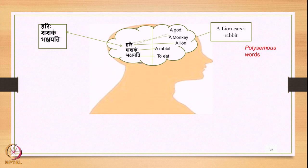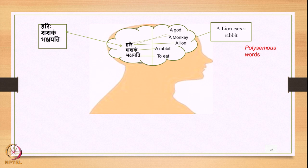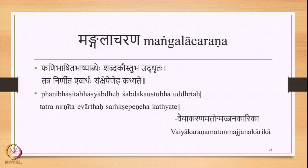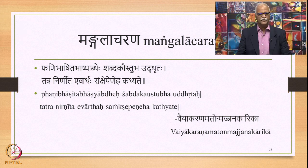To summarize, this process of speech production involves the cognitive process and the physical process, and the cognitive process plays a very important role as the cause of the effect in the form of the physical process. This is what was explained in this lecture also through the diagrammatic representation. Coming to the close of this lecture, we recite the mangalacharana taken from the important work of Bhattoji Dikshita called Vayyakarana Maton Majjana Karika.